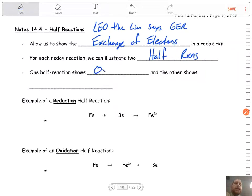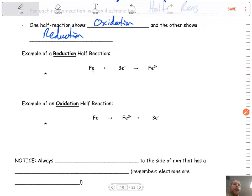One half reaction is going to show us oxidation, and the other one is going to show us reduction. Here's an example of a reduction half reaction: we have Fe + 3e⁻ yielding Fe³⁺ ion. What we can see is that we have electrons on the left side as a reactant, which means they are gained in the reaction. Think GER.